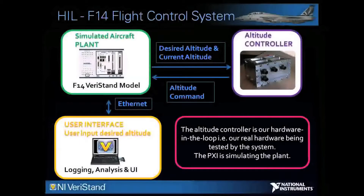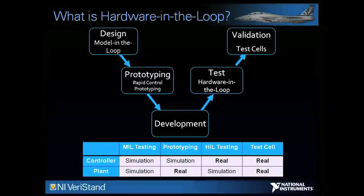Having discussed the F-14 closed-loop system that we have in place, let's have a look at how our test correlates to the V-diagram approach, whereby the development runs alongside the testing of a control system. The design stage involves designing the controller from first principles. At this stage both the controller and the plant are simulated in separate models running on the Veristand engine on a real-time target such as PXI. This is known as model-in-the-loop testing.